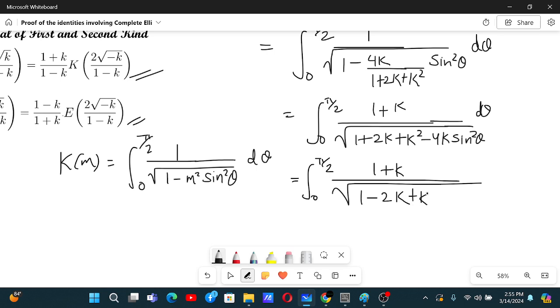1 minus 2k plus k square, yeah, and then plus 4k cos square theta. Basically, I change sin square theta to 1 minus cos square theta. So that's why here's minus 2k and here's plus 4k.